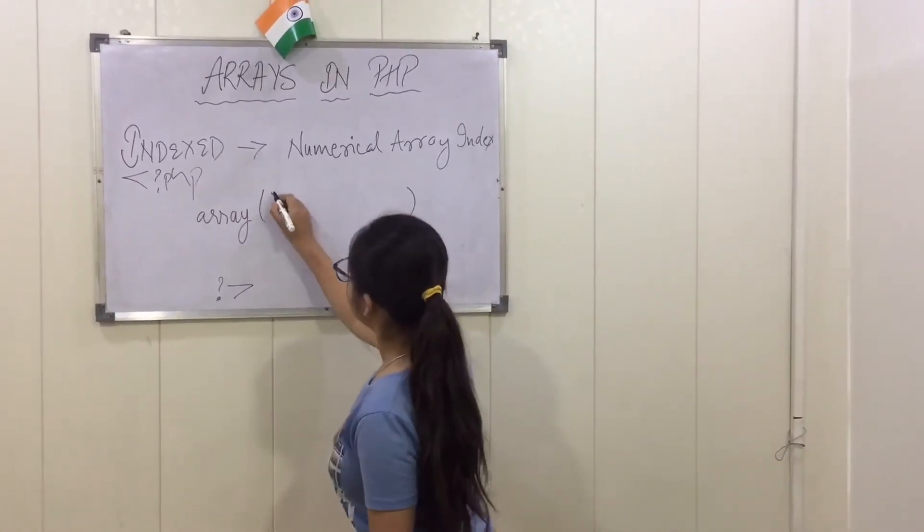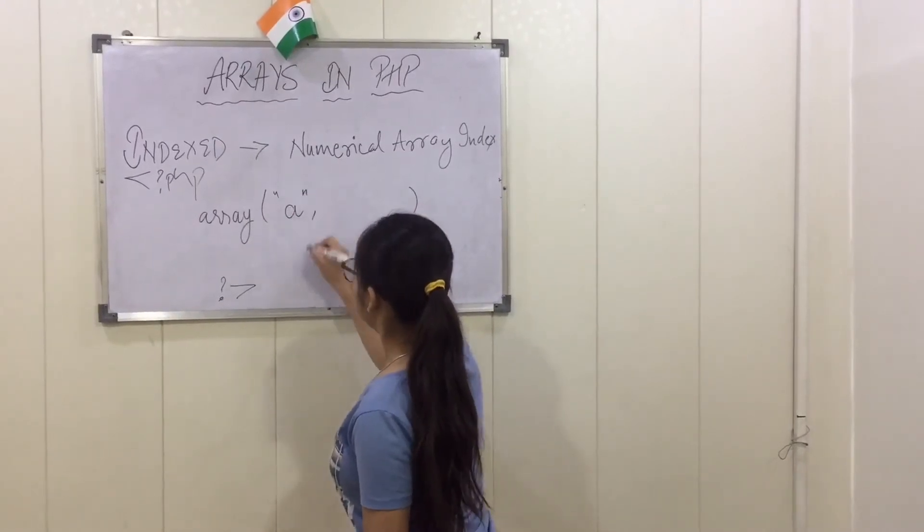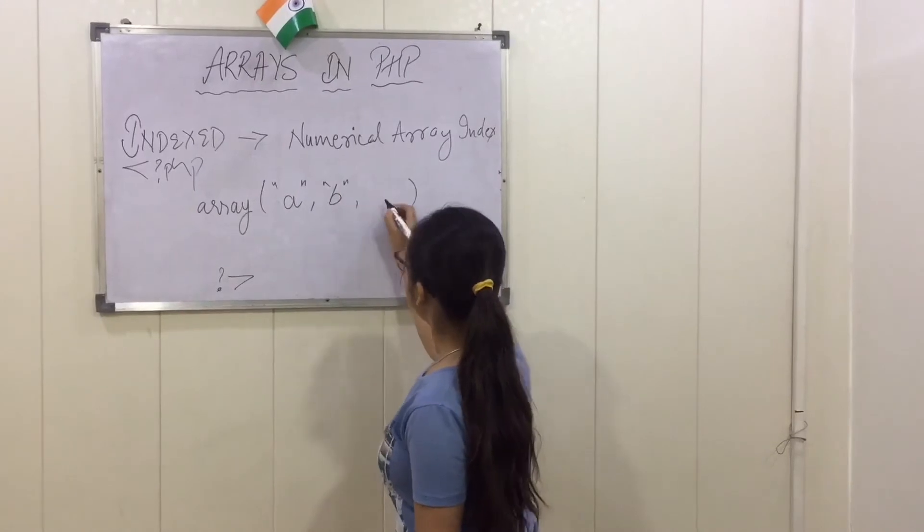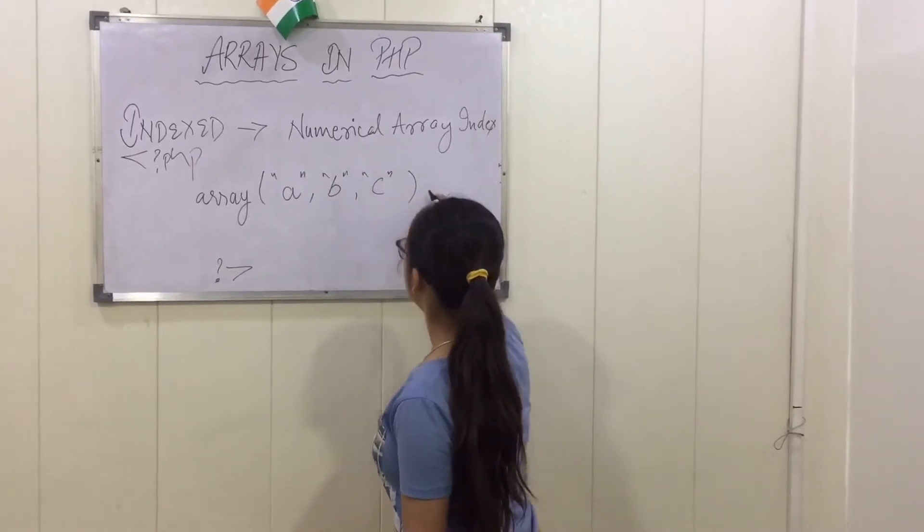Now we will pass the array's values. Suppose my first value is A with double quotes, my second value is B, and then C. That is my third value.